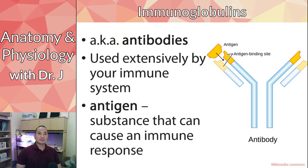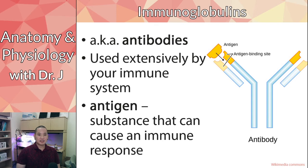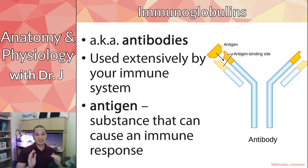An antigen is a substance that can cause an immune response. It can be a protein, a carbohydrate, or a lipopolysaccharide. Antibodies are made out of proteins, but any chemical that can be bound by an antibody can be an antigen — it doesn't have to be a protein. In general, an antigen is something that generates antibodies — you can think of it as 'antibody-generating.'